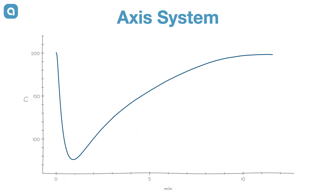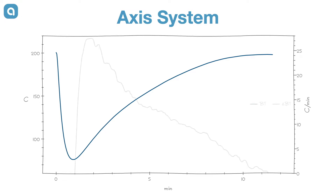The rate of rise curve is computed from the temperature signal and represents the speed of temperature changes, displayed along a separate horizontal axis on the right.